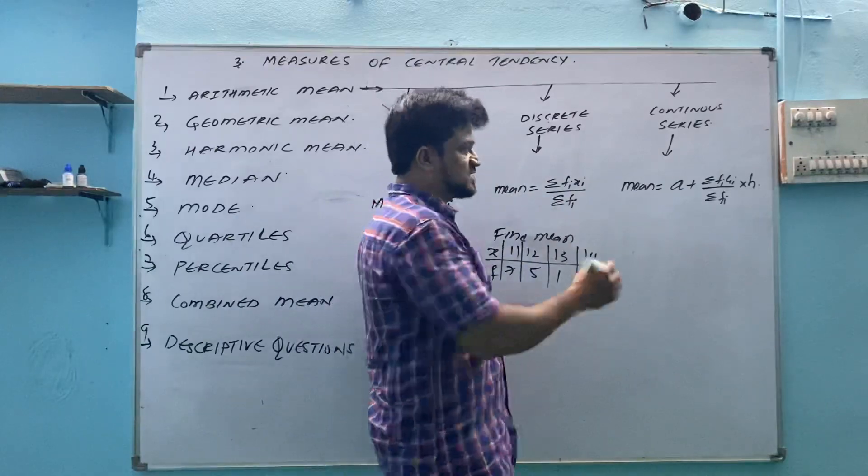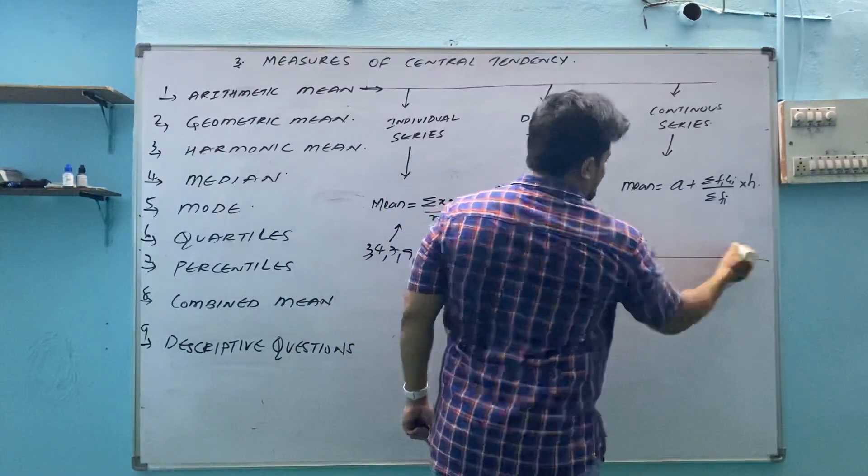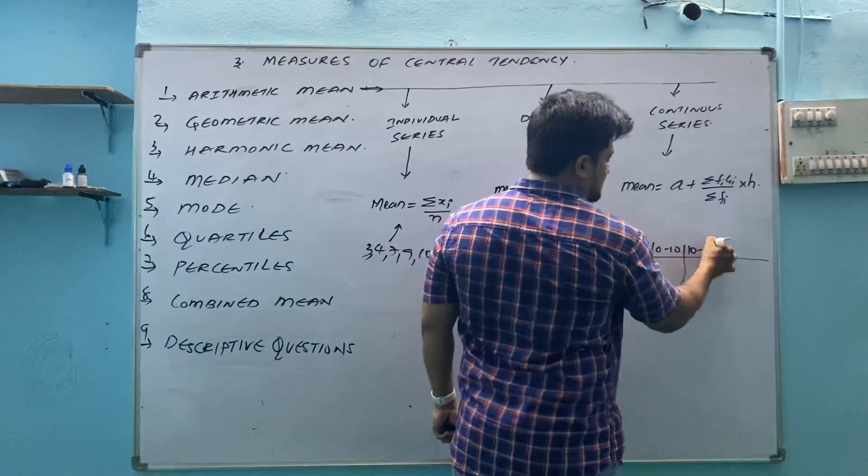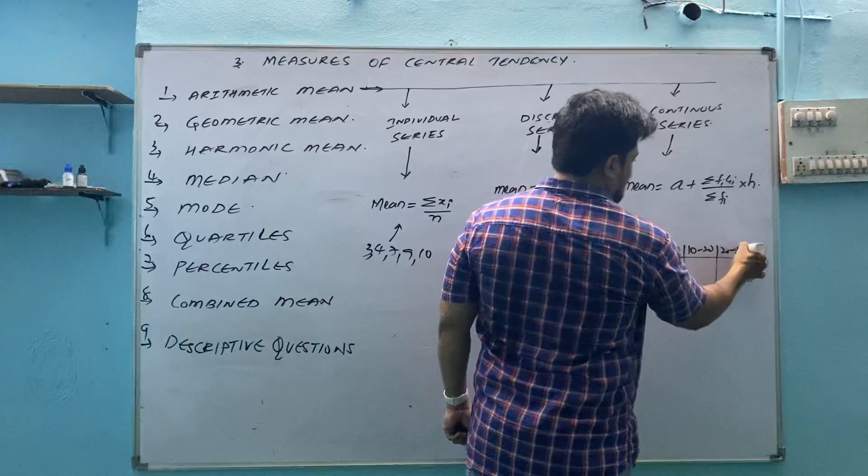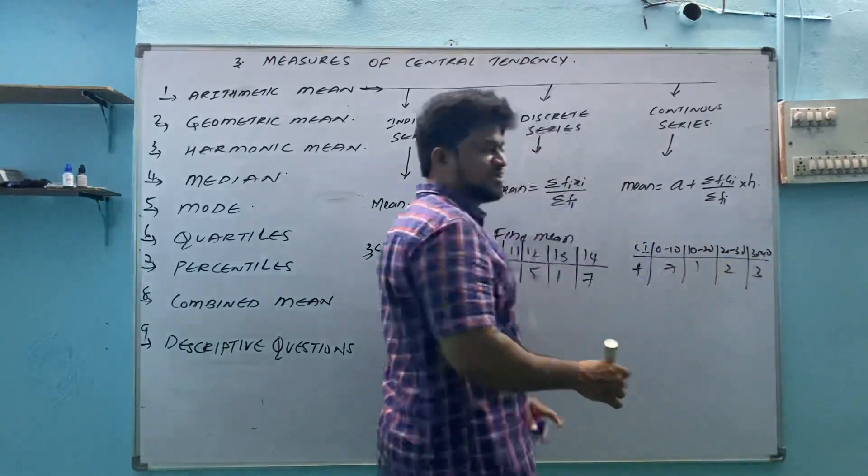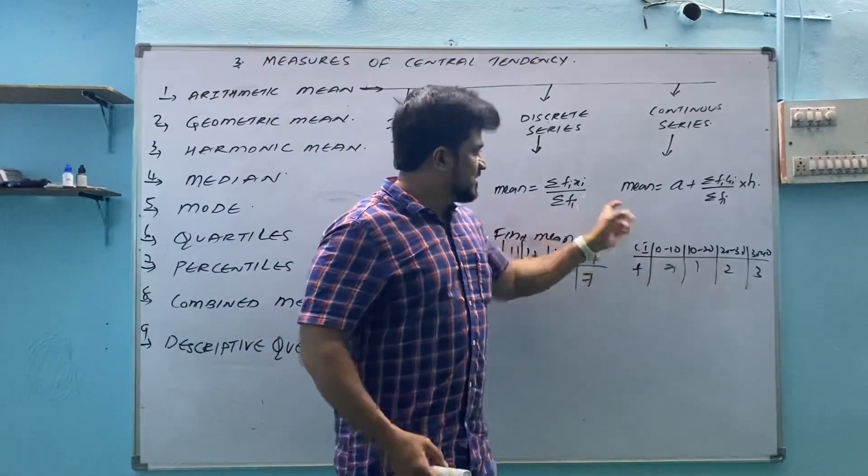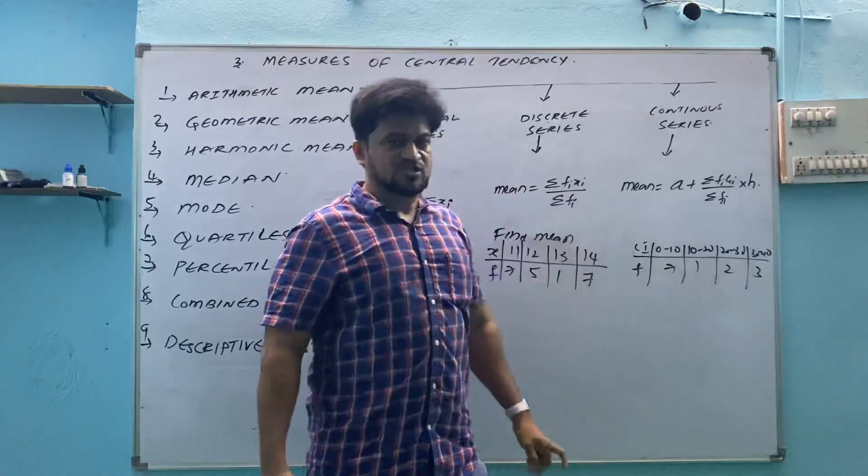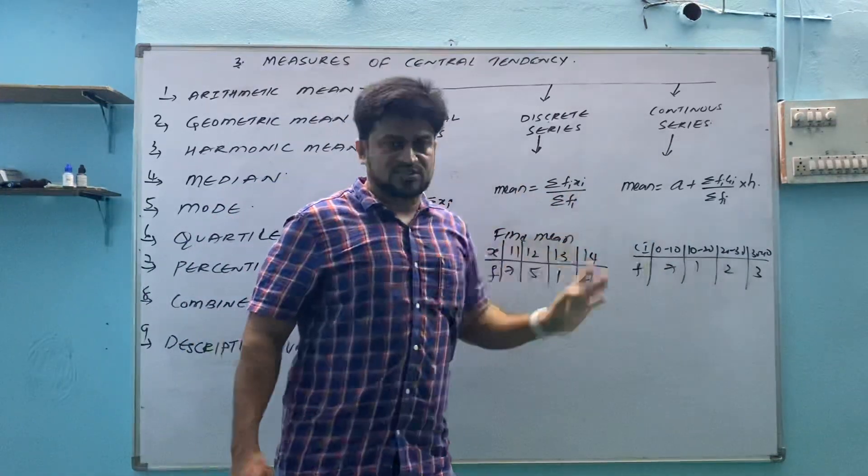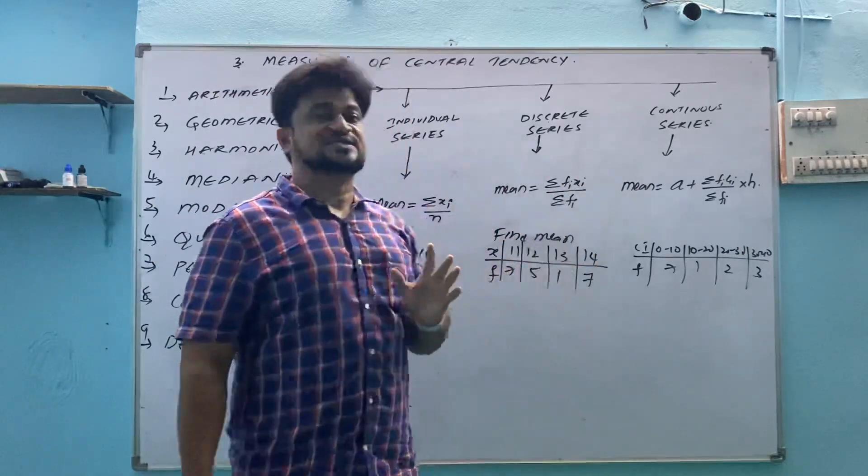So for that mean, which one is set to be continuous series? For what question we will use this one? Questions of this form: class interval is given and frequency is given. Some data is given in table form, 0 to 10, 10 to 20, 20 to 30, 30 to 40, 7, 1, 2, 3. Anything is given in this form is known to be continuous series question. This formula we cannot use for continuous series question. Now, individual series formula we cannot use for continuous series question. So what do we have? Three different formulas for three different series of questions.